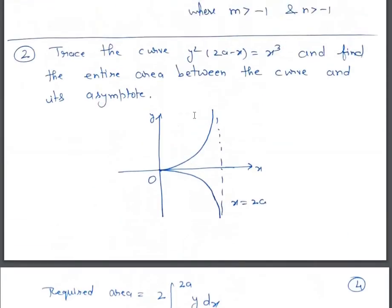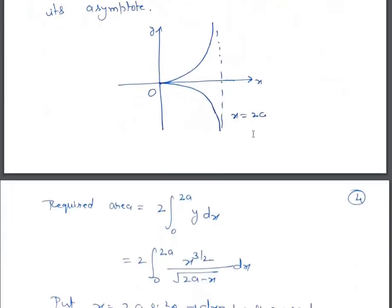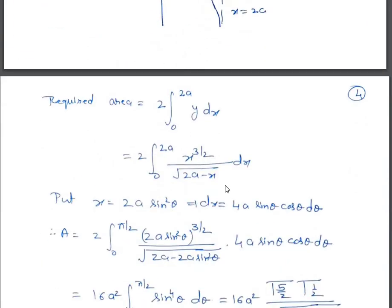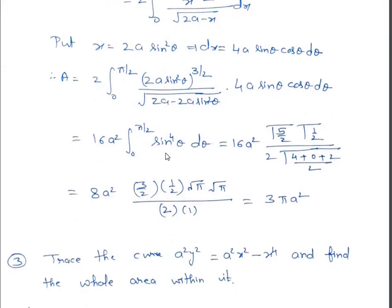From the curve, y = x^{3/2} / √(2a - x). We substitute x = 2a sin²θ, so dx = 4a sinθ cosθ dθ. Substituting these values, the area becomes 2 ∫₀^{π/2} [(2a sin²θ)^{3/2} / √(2a - 2a sin²θ)] · 4a sinθ cosθ dθ, which simplifies to 16a² ∫₀^{π/2} sin⁴θ dθ.